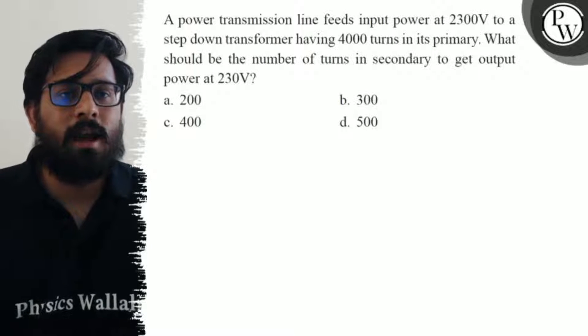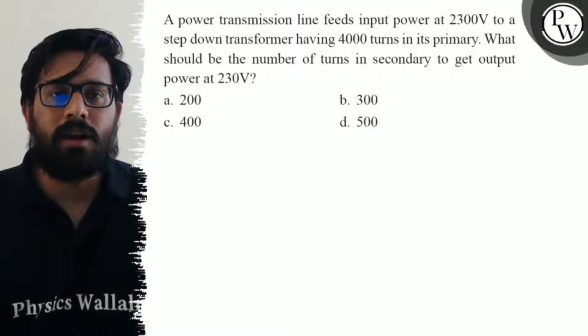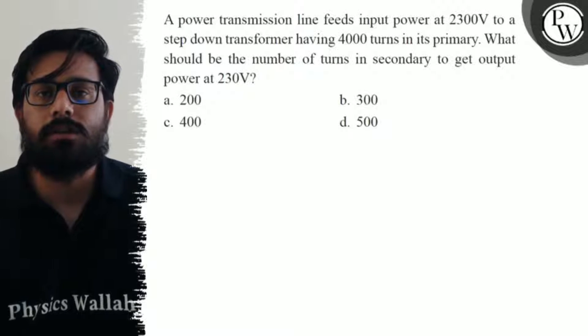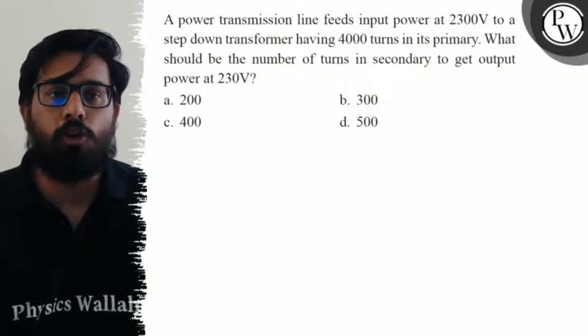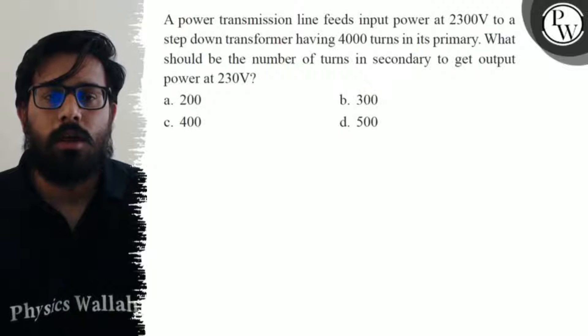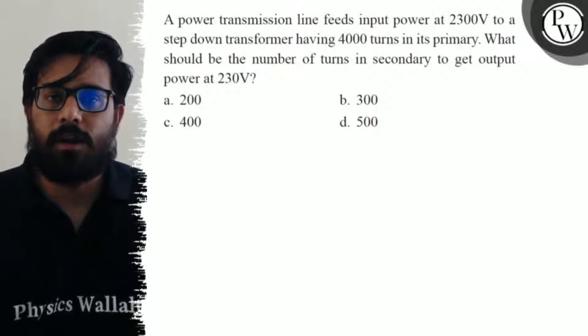Hello, let's see the question. A power transmission line feeds input power at 2300 volts to a step-down transformer having 4000 turns in its primary. What should be the number of turns in the secondary to get the output power at 230 volts? Your first option is 200, second option is 300, third option is 400, and fourth option is 500.